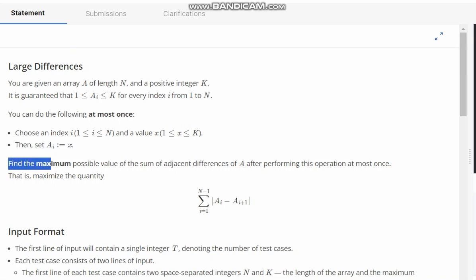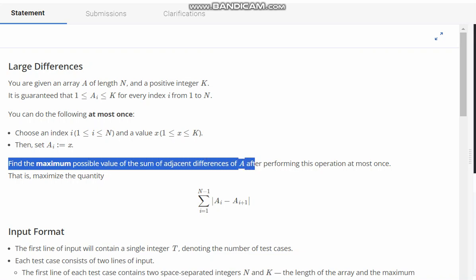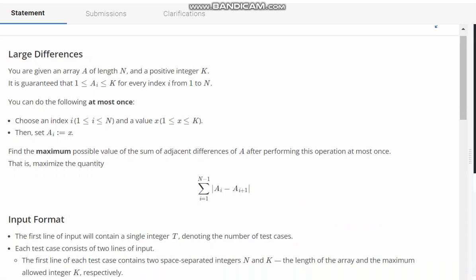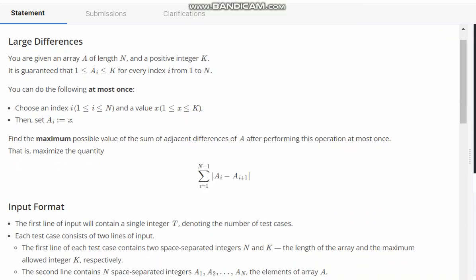Find the maximum possible value of sum of adjacent differences of A after performing this operation at most once. That is, maximize the quantity. So we need to maximize the sum of the difference of A[i] minus A[i+1].